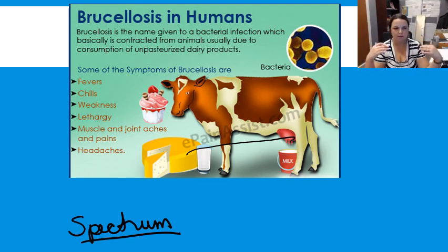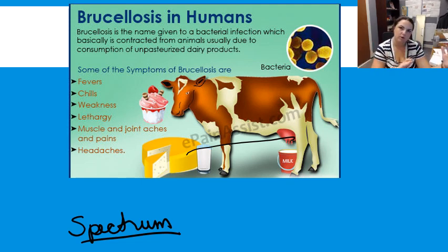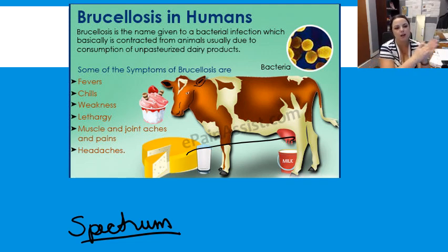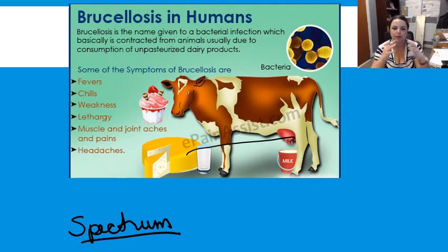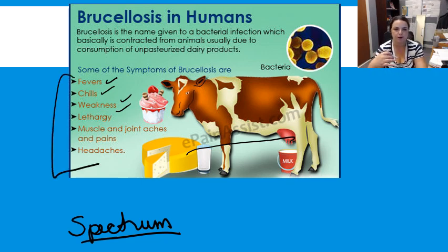The disease has a standard course if a patient is going to show symptoms. It begins anywhere from one to three weeks after exposure — a fairly long period of time, which makes sense because this is a slow-growing organism inside the patient too. Initially the symptoms are pretty nonspecific: fever, chills, weakness, lethargy, muscle and joint aches, and headaches — malaise, myalgia, arthralgia, probably some anorexia.